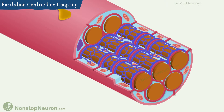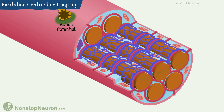First of all, the stimulus for contraction comes along a nerve and reaches the neuromuscular junction. After all the events of neuromuscular transmission, which are already covered in a separate video, an action potential is generated at the post-synaptic membrane.